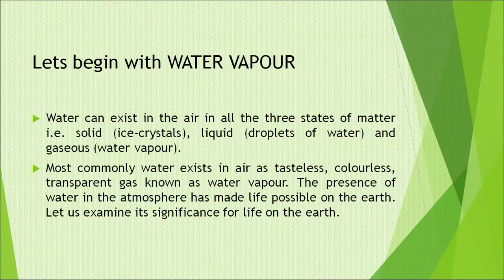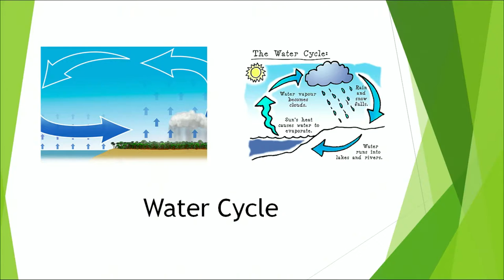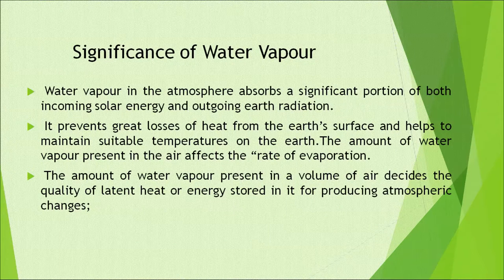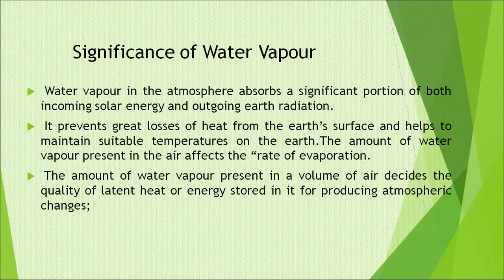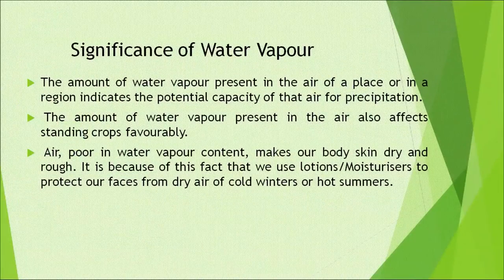The presence of water in the atmosphere has made life possible on the earth. Look at this picture which depicts the water cycle — how water evaporates from the earth, goes back to the atmosphere, and condensation happens which leads to precipitation. Water vapour in the atmosphere absorbs a significant portion of both incoming solar energy and outgoing earth radiation. It prevents great losses of heat from the earth's surface and helps to maintain suitable temperatures on the earth. The amount of water vapour present in the air affects the rate of evaporation, and decides the quantity of latent heat or energy stored in it for producing atmospheric changes. The amount of water vapour present in the air of a place indicates the potential capacity of that air for precipitation.